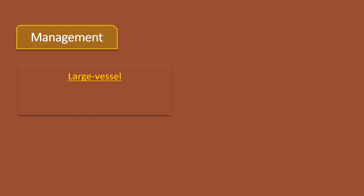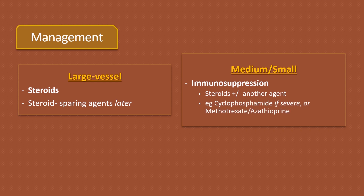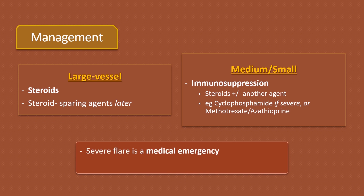Treatment of large vessel vasculitis is mostly steroids, and steroid-sparing agents may be added later in the disease course. Medium and small vessel vasculitis are treated through immunosuppression — a combination of steroids and another immunosuppressant, for example cyclophosphamide in severe cases. In other cases, depending on features, methotrexate or azathioprine can also be used. Please note that a severe vasculitic flare is a medical emergency; if suspected, seek urgent help as organ damage may occur rapidly.